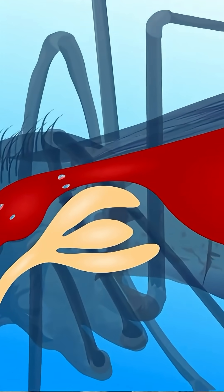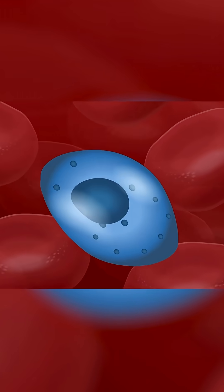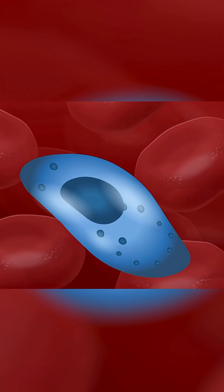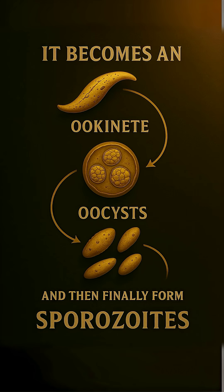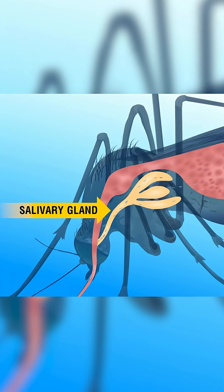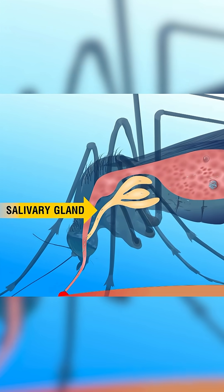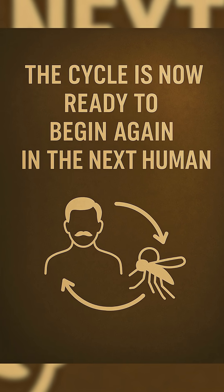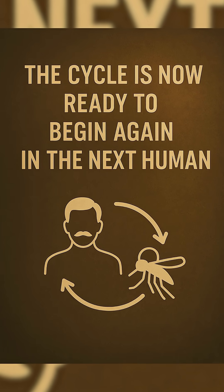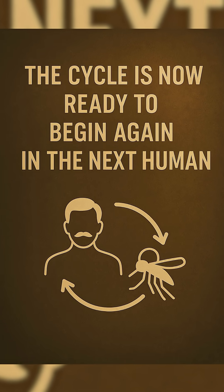Inside the mosquito's gut, fertilization happens, forming a zygote. It becomes an ookinete, then an oocyst, and finally forms sporozoites again, which travel into the mosquito's salivary gland. This cycle is now ready to begin again in the next human.